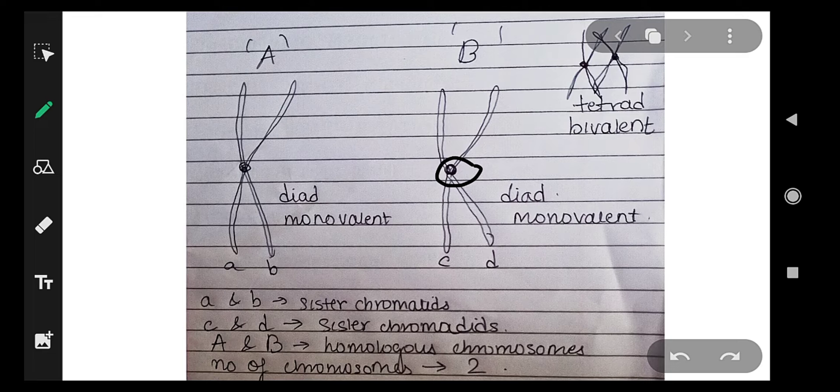We count the number of chromosomes based on the number of centromeres. Since these two chromosomes are not connected and we can see two centromeres, we can say that we have two chromosomes.